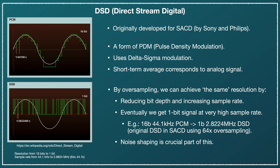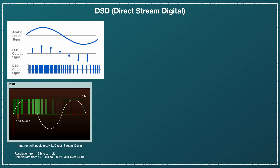Noise shaping is very important when doing this delta-sigma modulation — you're increasing the sample rate and pushing the noise above the audio band. Here is another illustration between PCM and DSD compared to the analog signal. With PCM you effectively give a value at the sample rate for what the signal magnitude is. And in DSD you just switch quickly between two values, and the average represents the analog signal value.